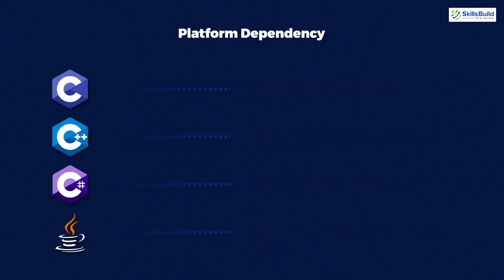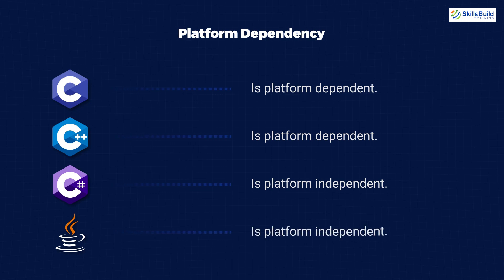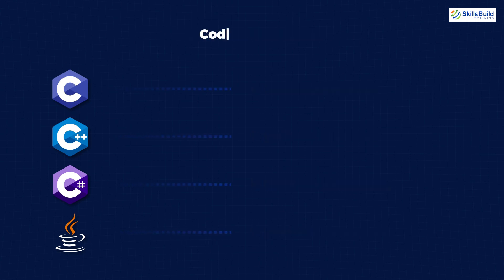If we talk about platform dependency: C is platform dependent and C++ is also platform dependent. C# is platform independent — although its syntax is similar to C and C++ and it was developed by Microsoft for Windows, it is still platform independent, which shows how powerful C# is. Java is also a platform-independent language.